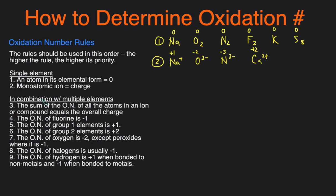Now let's look at the second category — when you have a combination of multiple elements. There are six rules for this category, and it makes the most sense to jump into examples because these rules depend on each other. Let's start with sodium chloride. Sodium is an alkali metal, and there's a rule that elements in the first group have an oxidation number of +1. Chlorine has a rule too — halogens are usually −1. So we have rules for both of these.